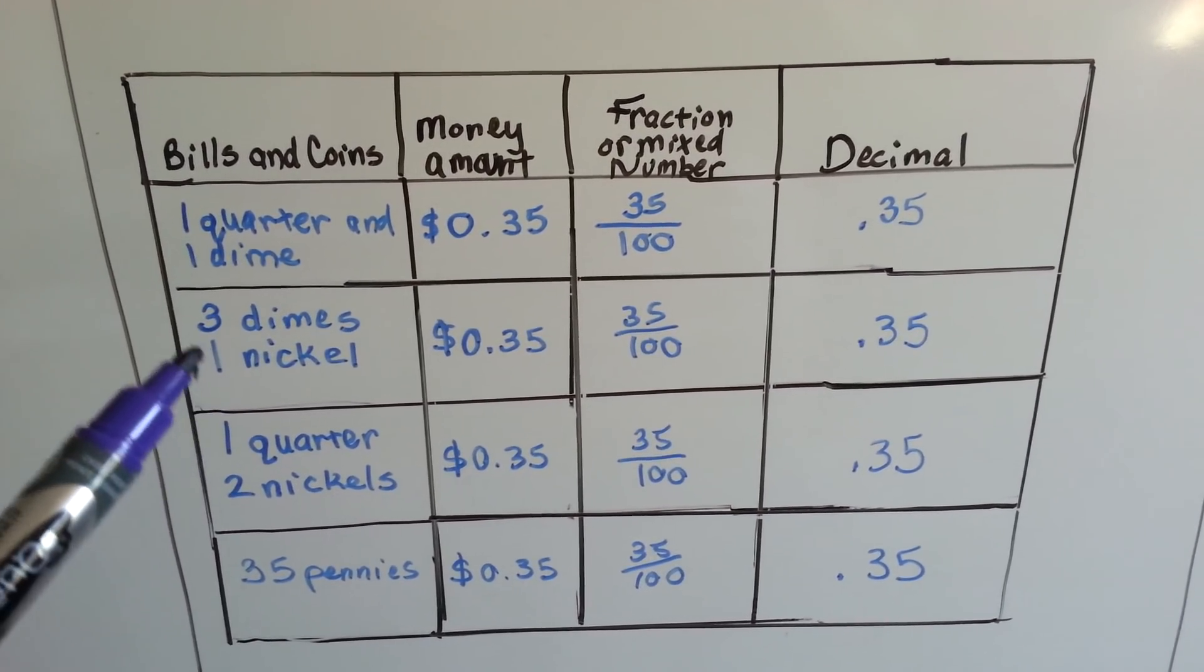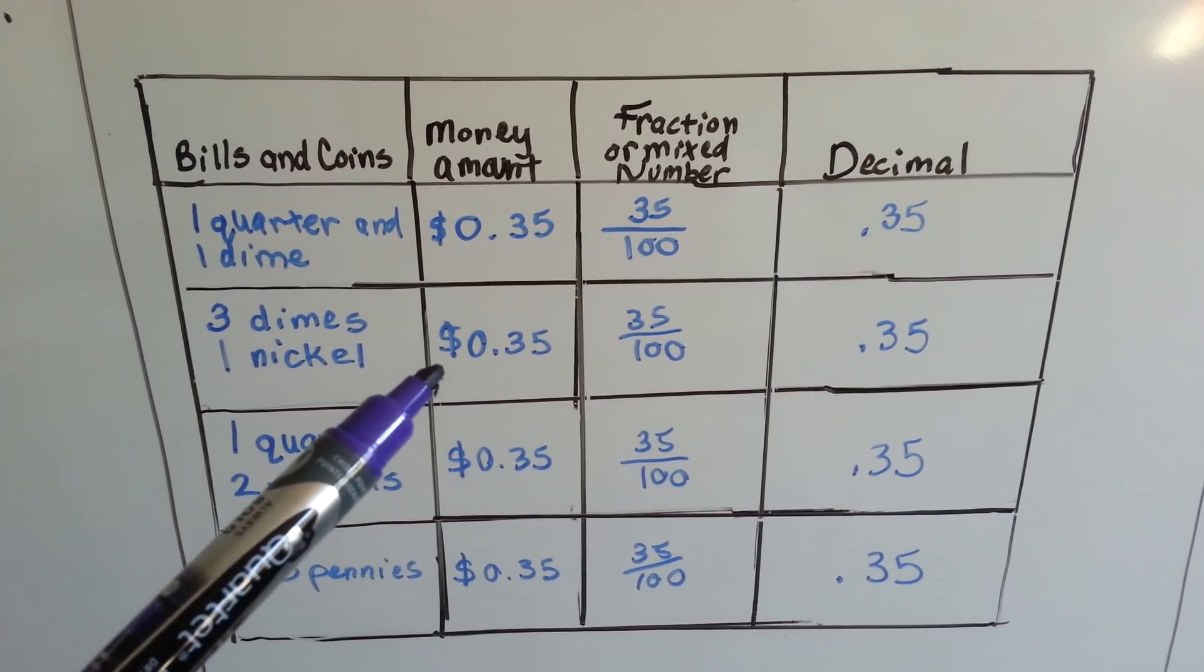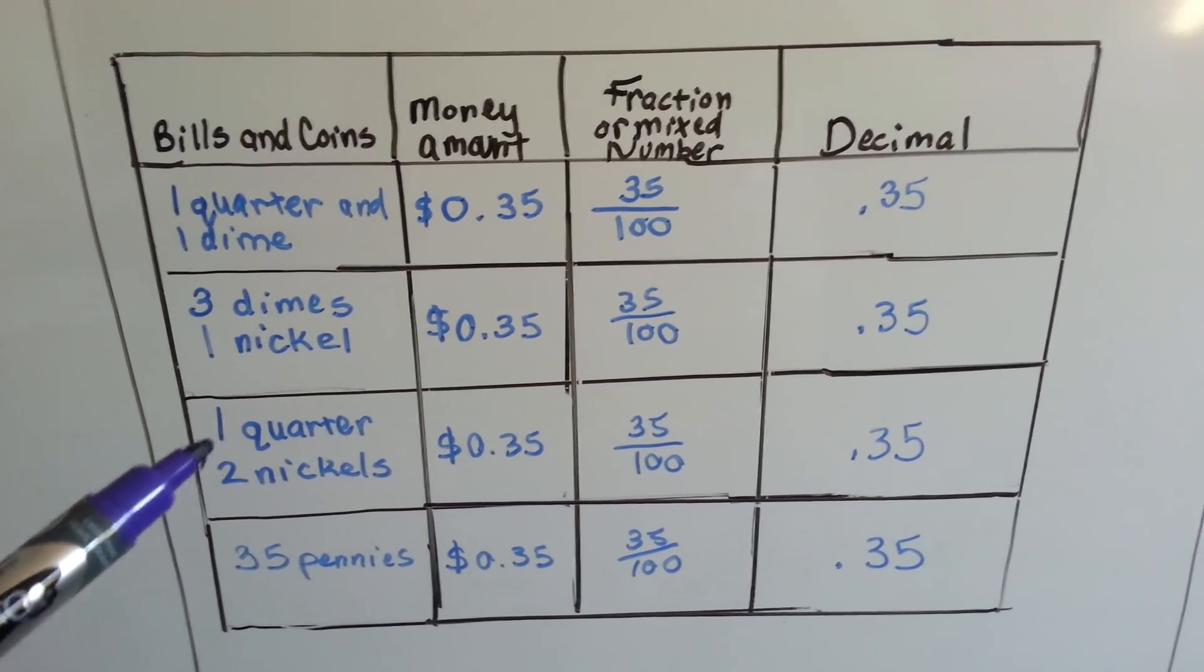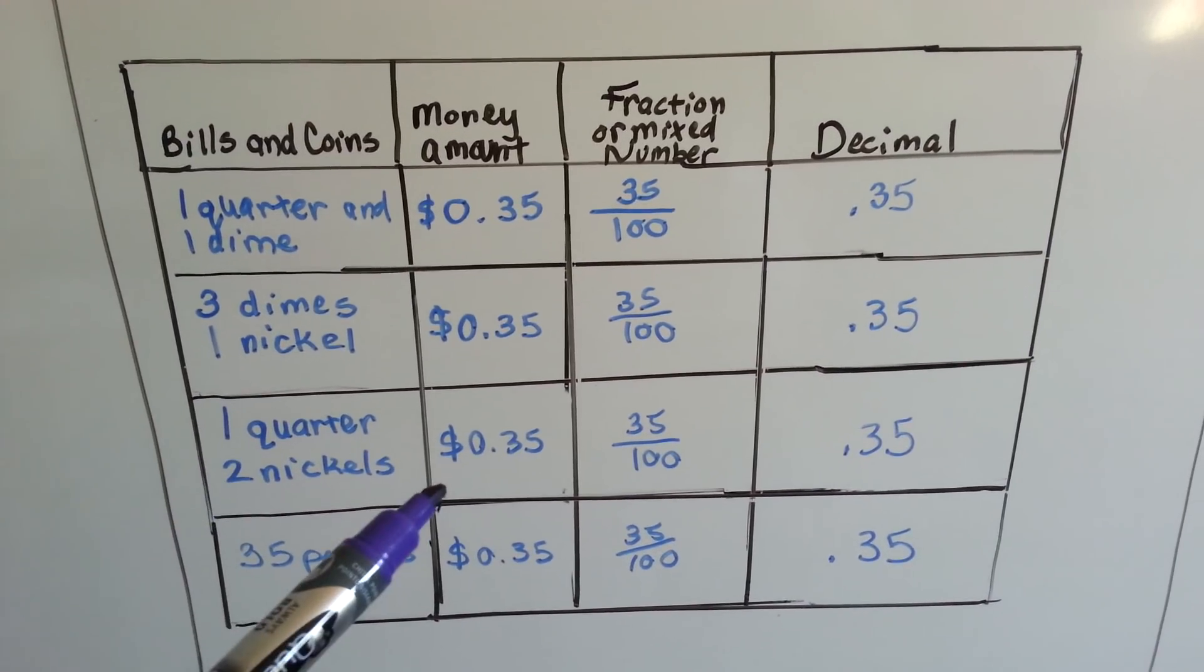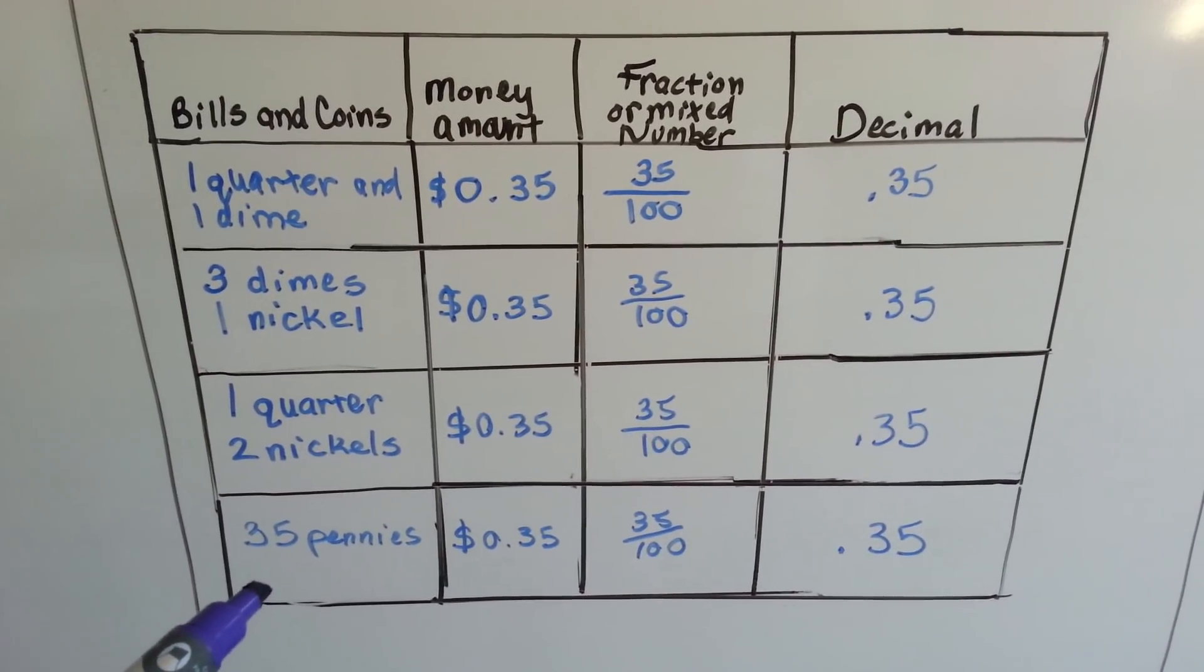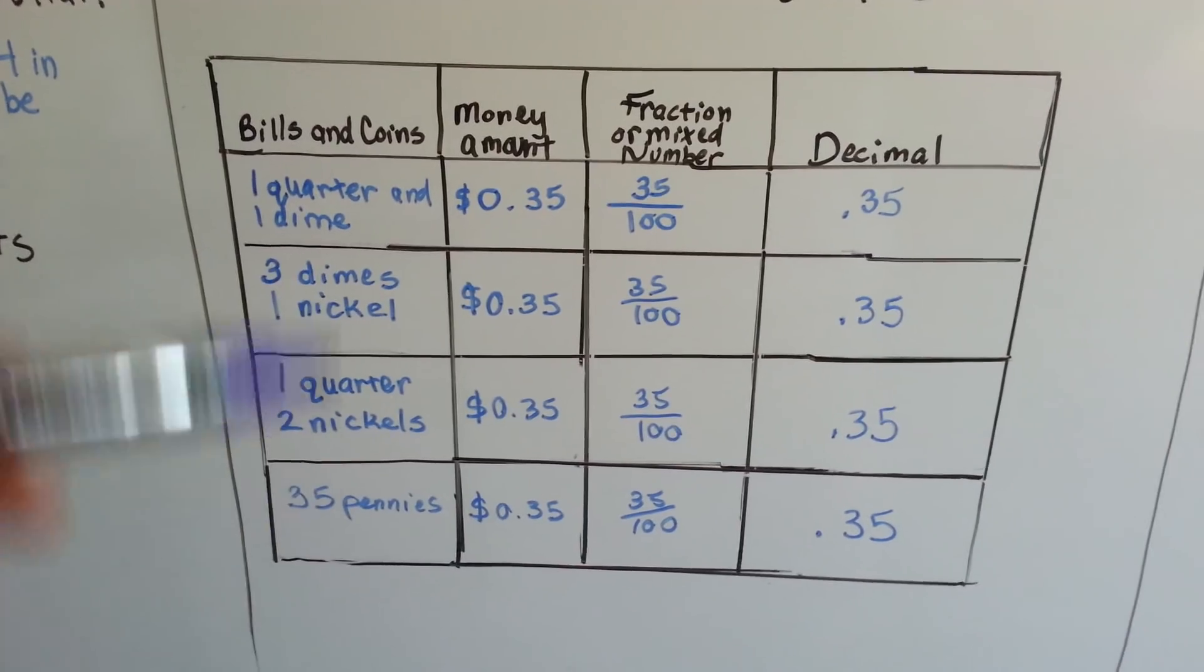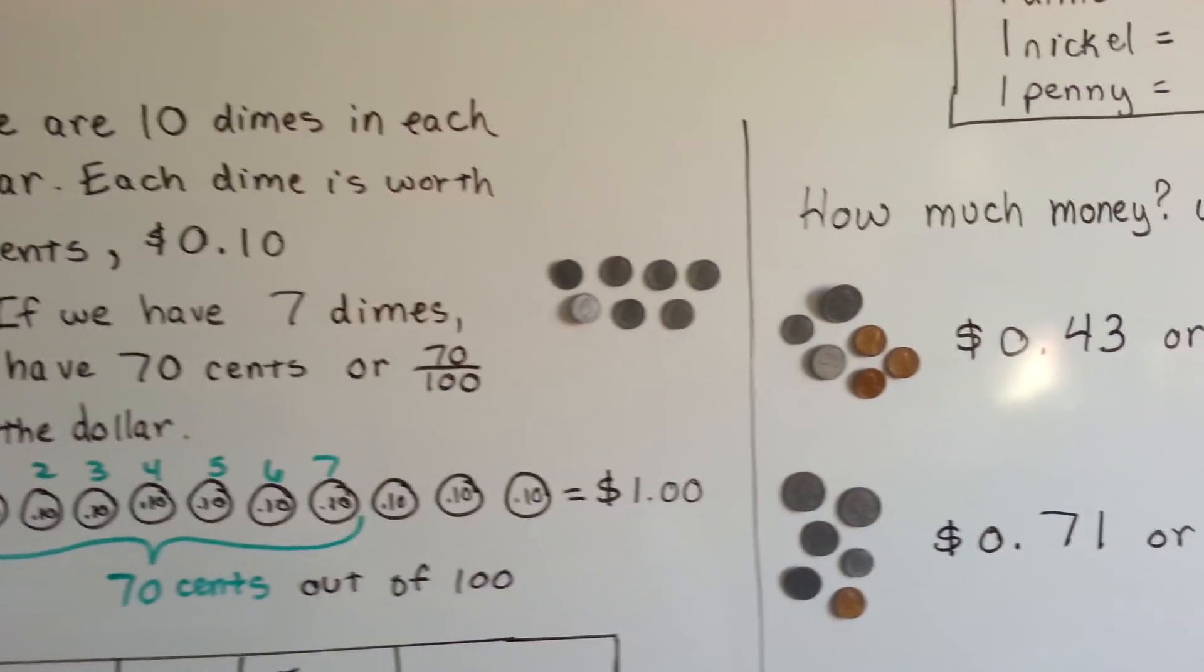If we had three dimes and a nickel, that would be 10, 20, 30, and a five. We would have 35 cents. We'd have 35 one-hundredths, and it would be written as .35. If we had a quarter and two nickels, we would still have 35 cents written as 35 one-hundredths or .35. If we had 35 pennies, we would have 35 cents or 35 one-hundredths or .35. There's all different ways we can make 35 cents with the combination of the money.